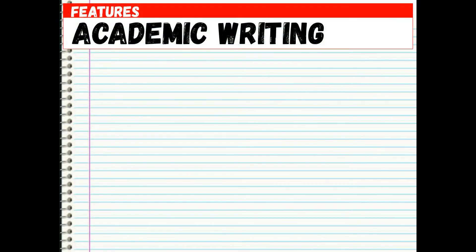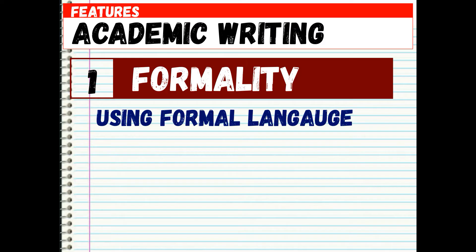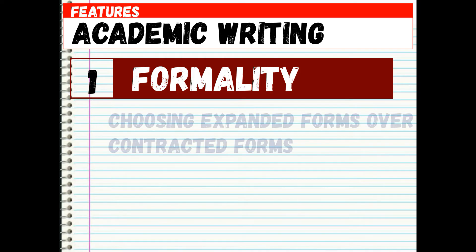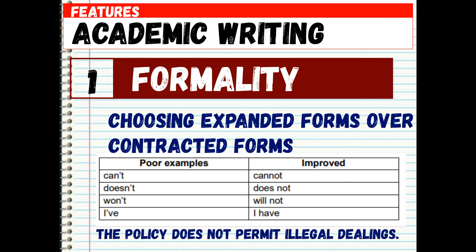Features of academic writing. One: formality. Formality is using formal language rather than everyday common language. It is achieved through choosing expanded forms over contracted forms — 'can't' becomes 'cannot,' 'doesn't' becomes 'does not,' 'won't' becomes 'will not,' 'I've' becomes 'I have.' The example sentence is: 'The policy does not permit illegal dealings.'